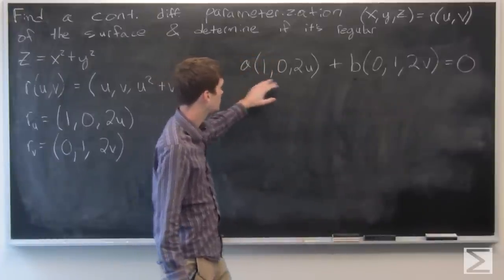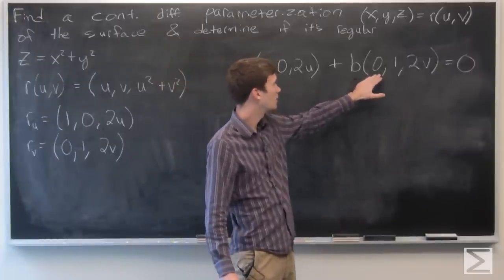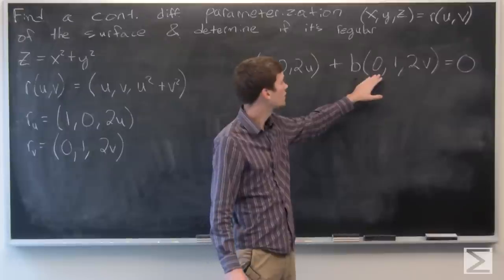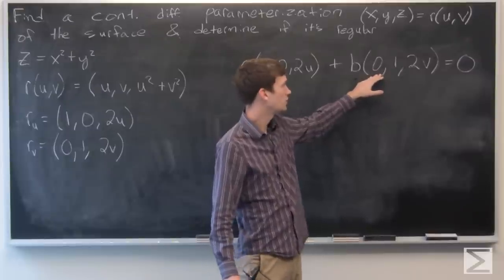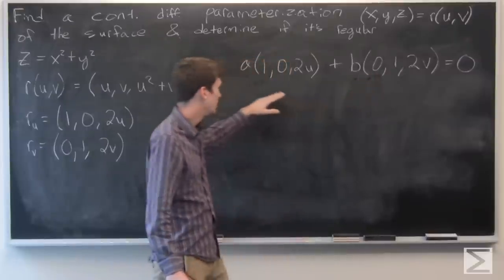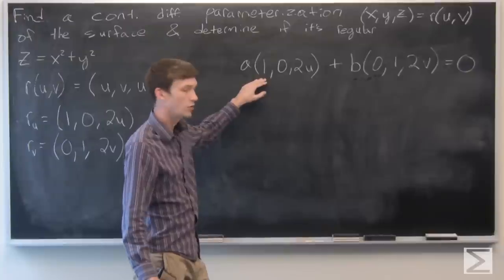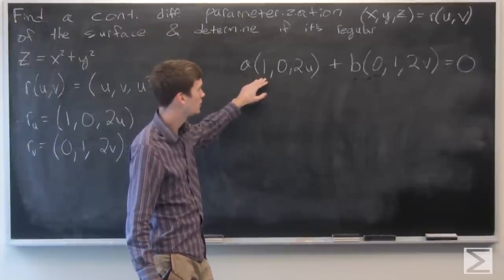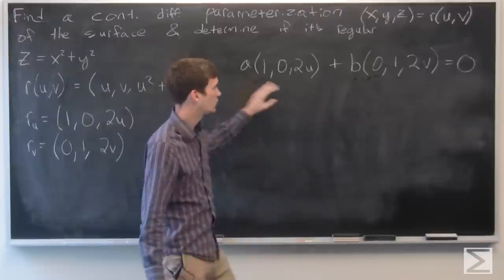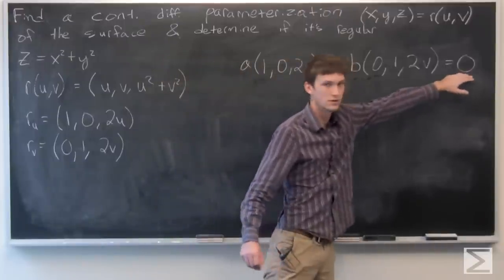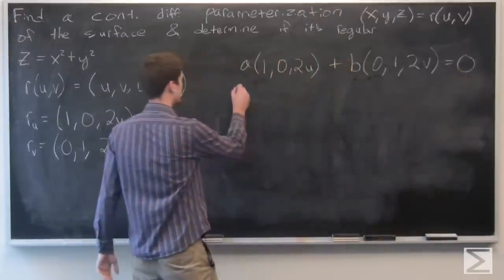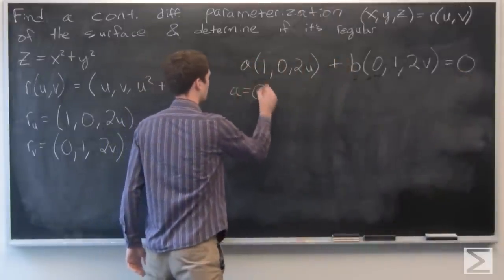So first looking at this, we see that of our vector multiplied by b, the first component is 0. So that means the first component of a is the only term that will count towards the first term of this, which is 0. So that implies that a is 0.